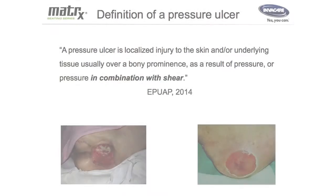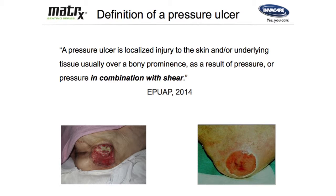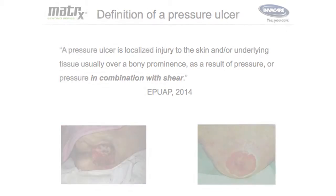So definition of a pressure ulcer. I'm one of those very old fashioned people that have to have definitions. The European Pressure Ulcer Advisory Panel has updated all of their work this year more recently. We know that it's a localised injury of skin and underlying tissue, usually over a bony prominence — that's no surprise to anybody — as a result of pressure or pressure in combination with shear.